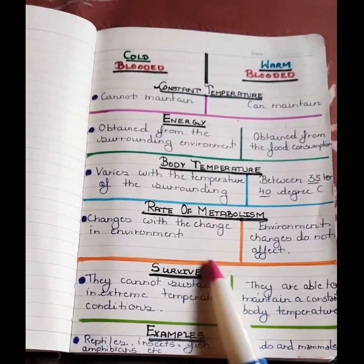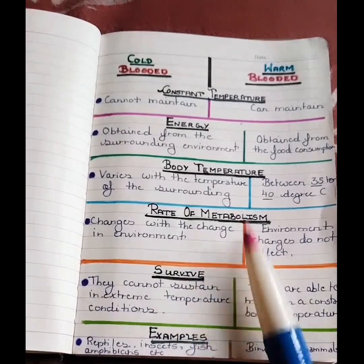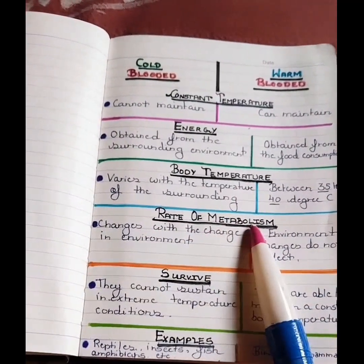So come to the point. Rate of metabolism: cold-blooded changes with the change in environment when we talk about rate of metabolism.